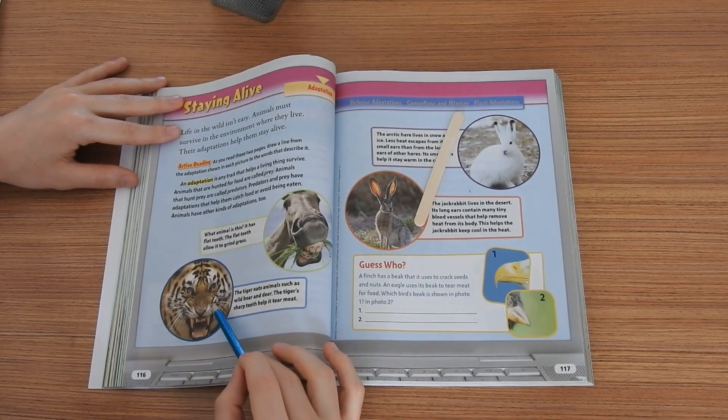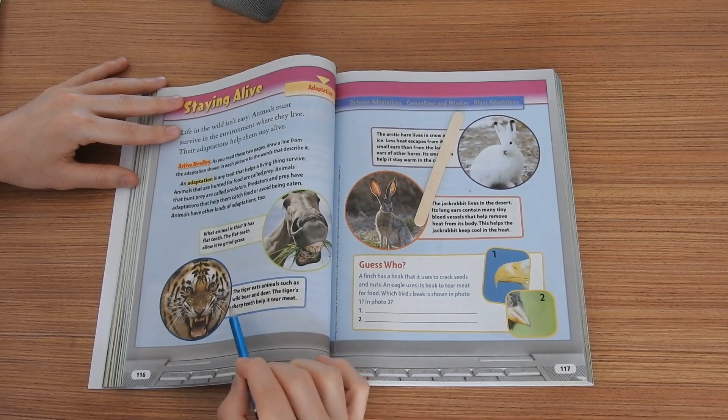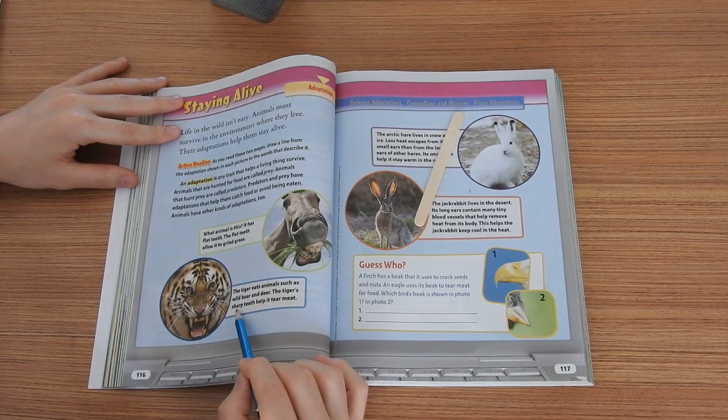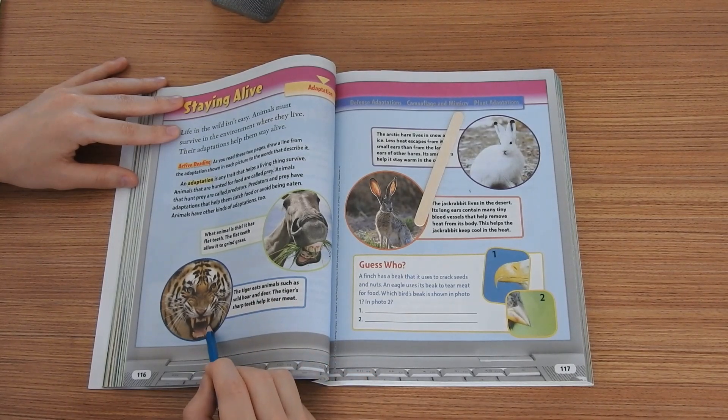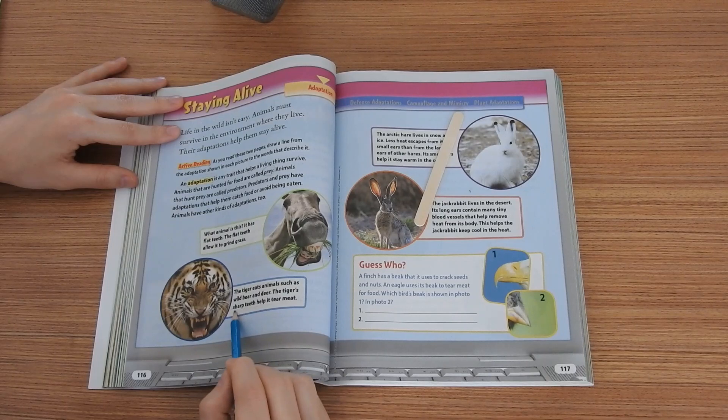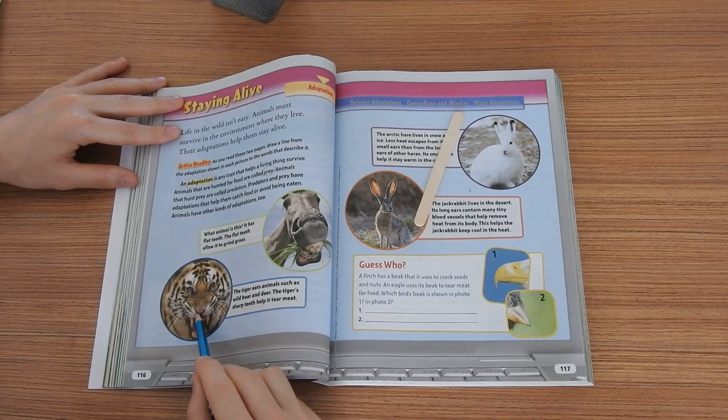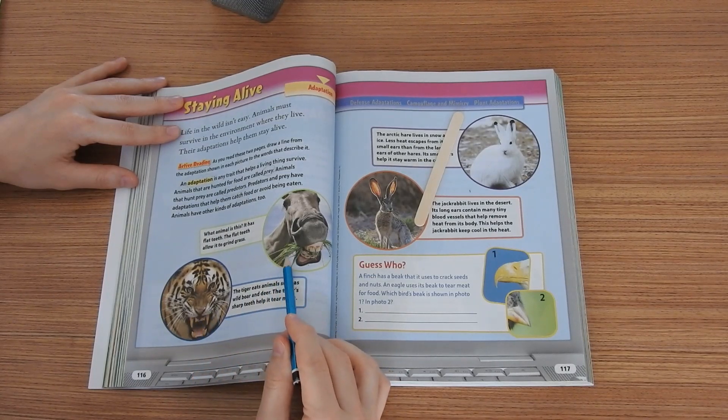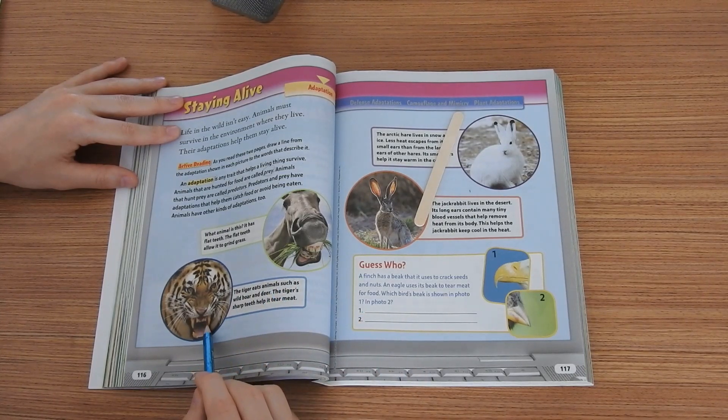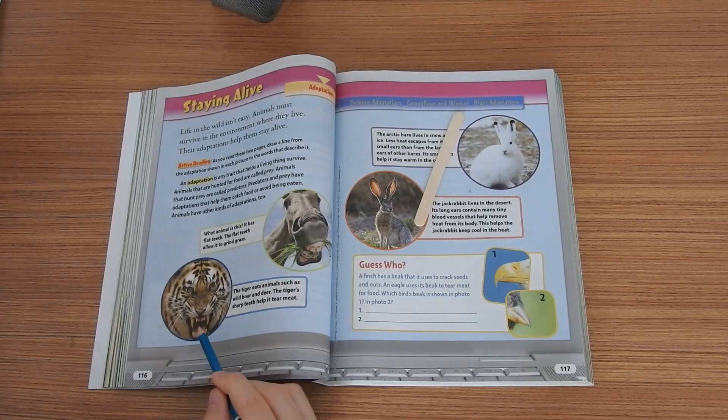So let's go to the next picture here. And here we have a tiger. So let's read the text. The tiger eats animals such as wild boar and deer. The tiger's sharp teeth, we can see here, help it tear meat. So basically tigers they don't eat grass. That's why they don't have flat teeth like this one but they have sharp teeth, sharp and pointy. Why? Because they need to tear meat.